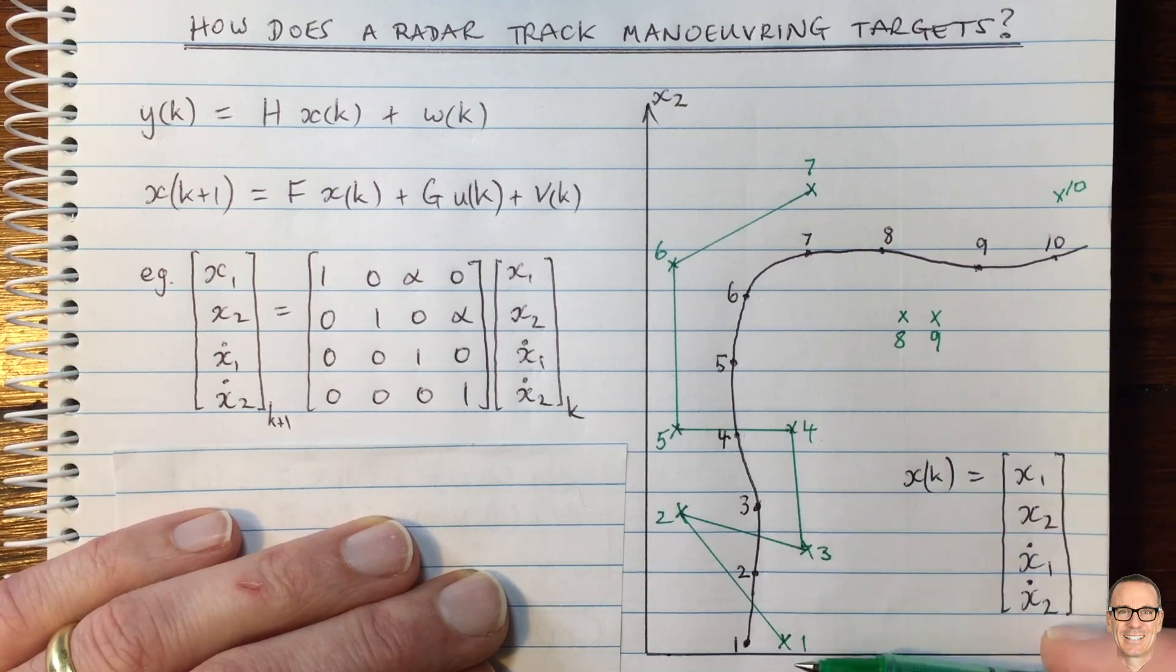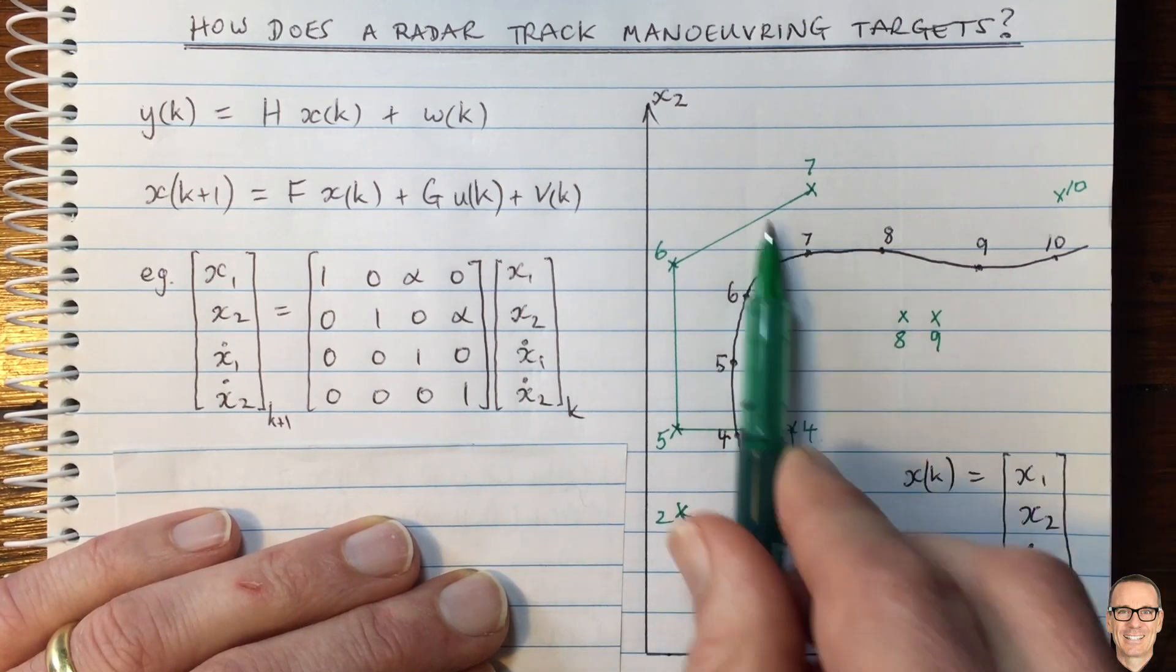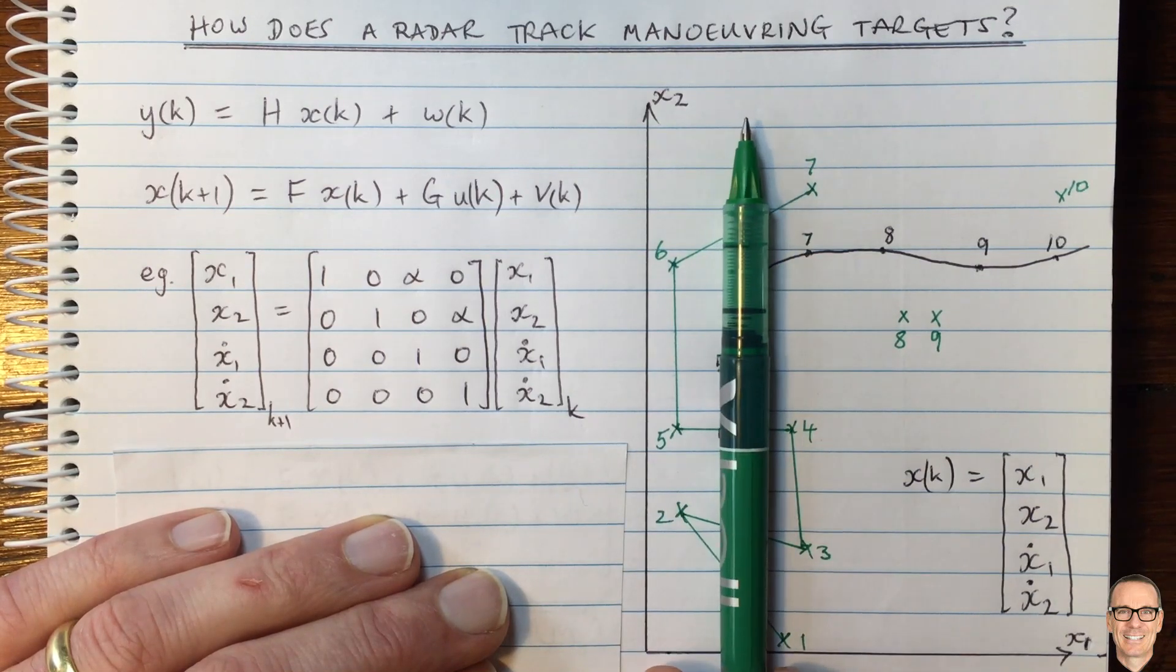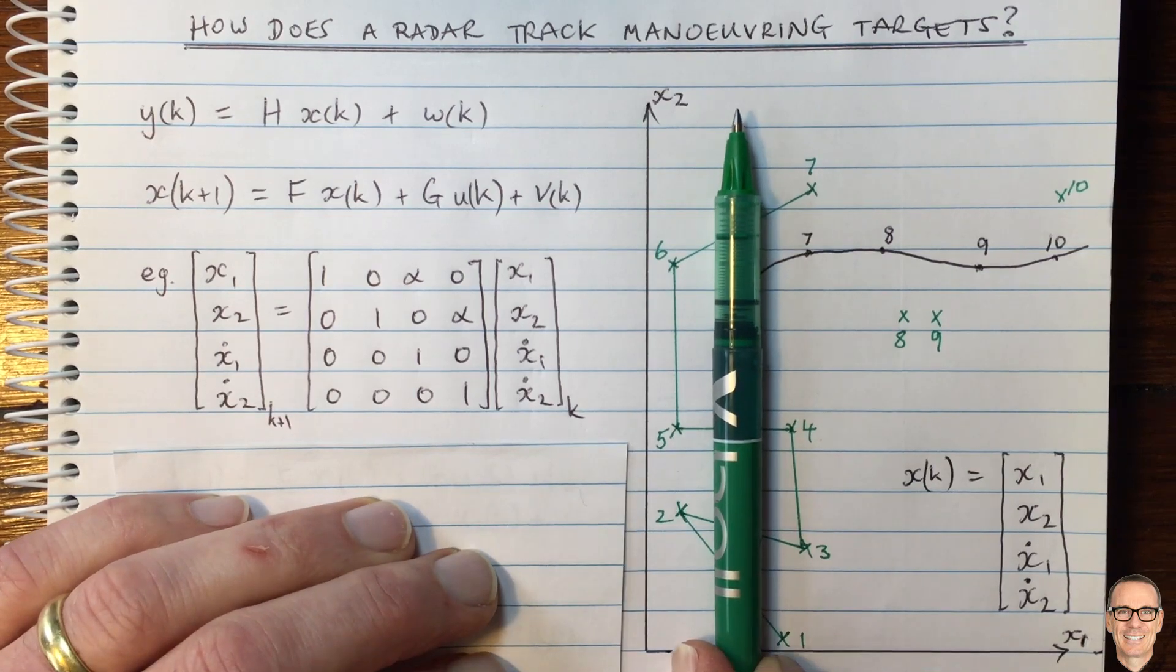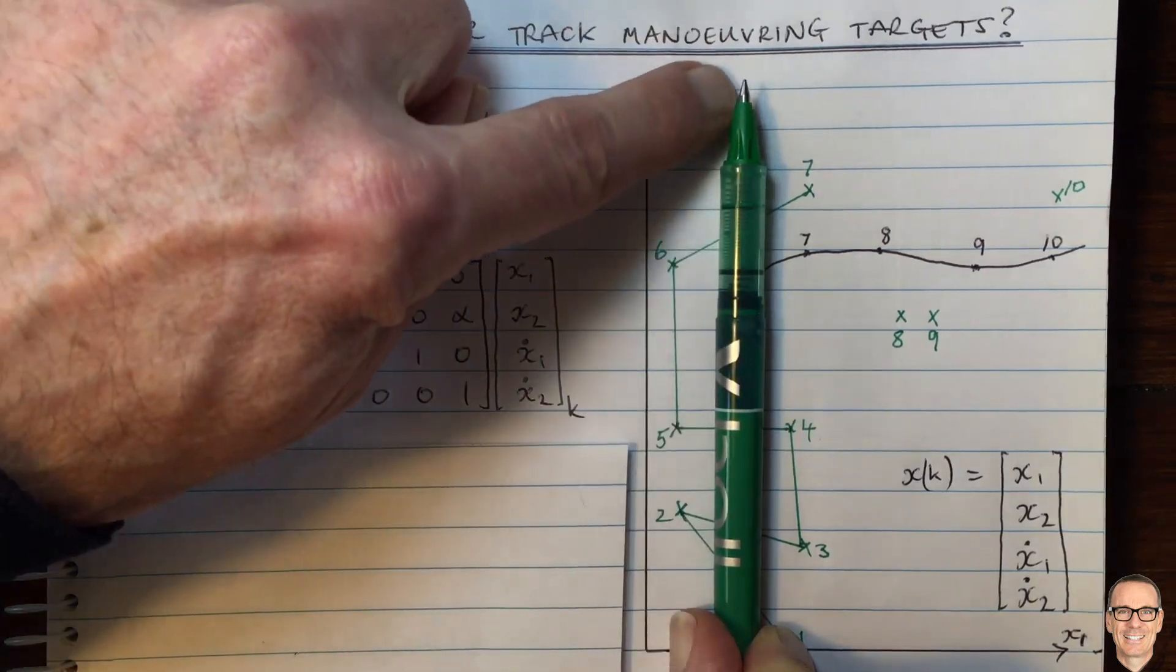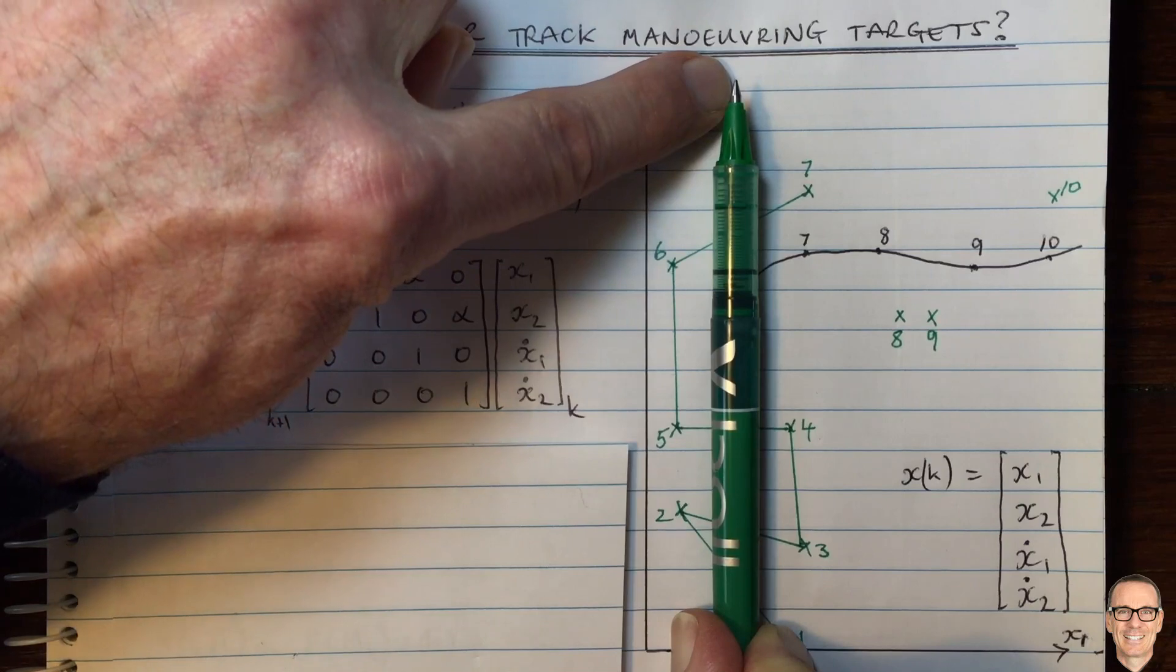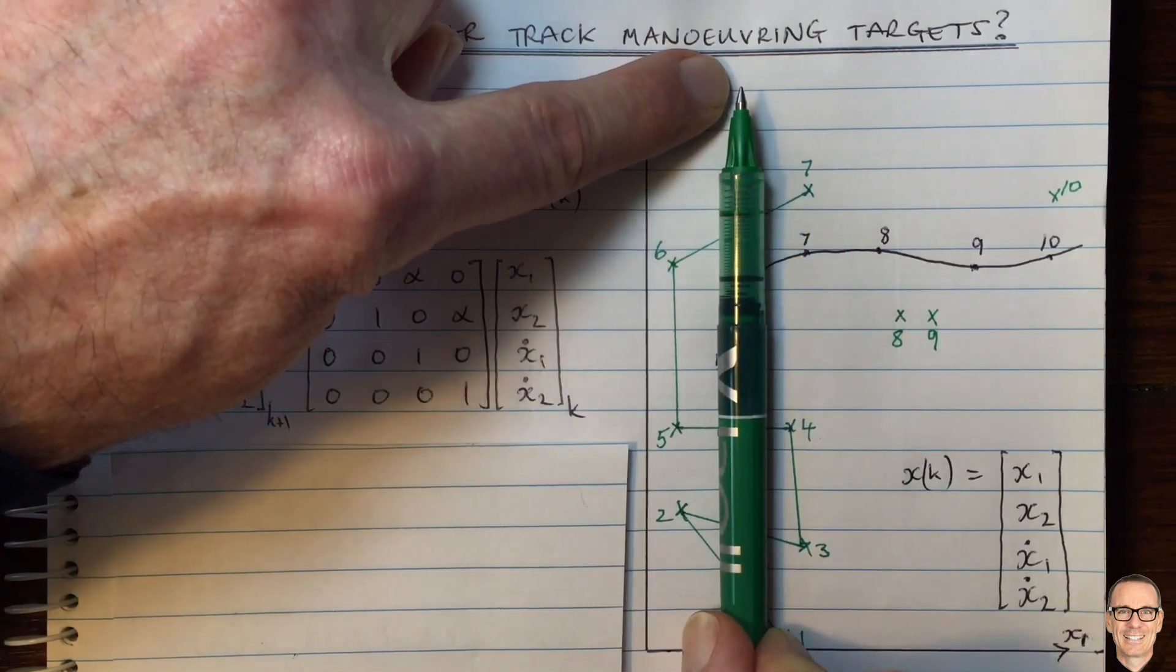So for example, if we did take a moving average, then we would end up with a line that goes up through the middle of these measurements. Don't forget the green is all the radar can see. And if we had this, we would probably be predicting that the next location would be somewhere up the top up here. So location eight would be somewhere up here if all we had was these green measurements and we were smoothing them out.